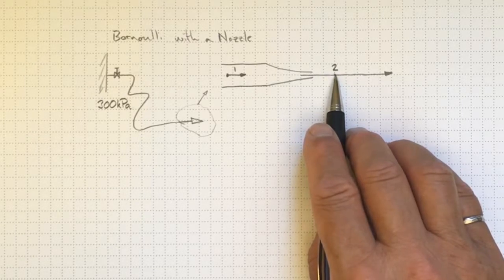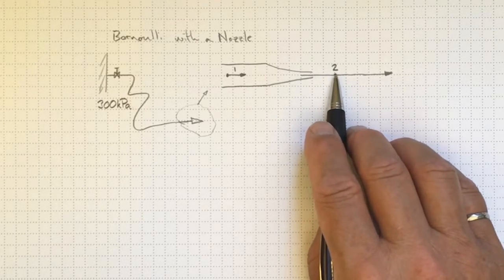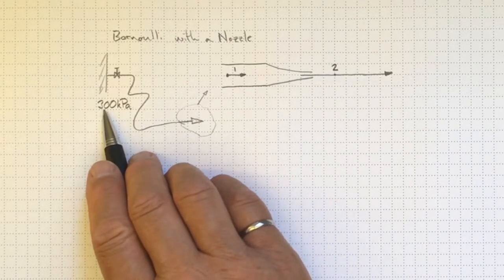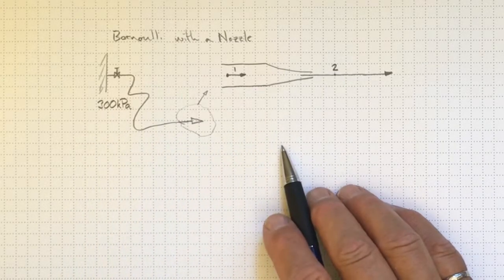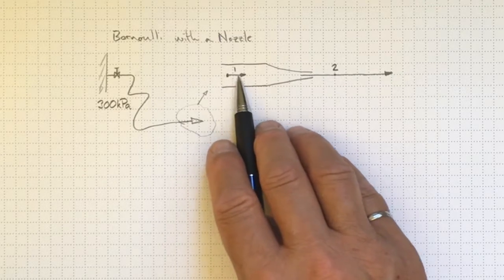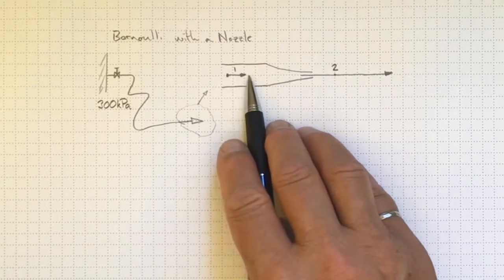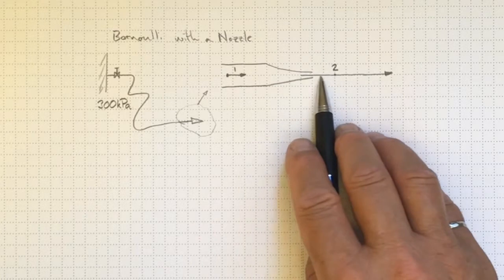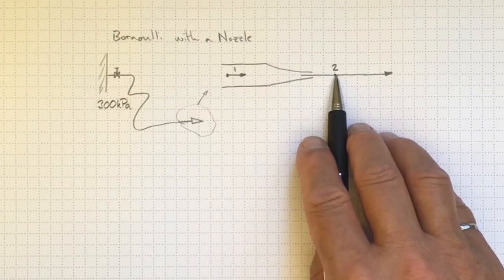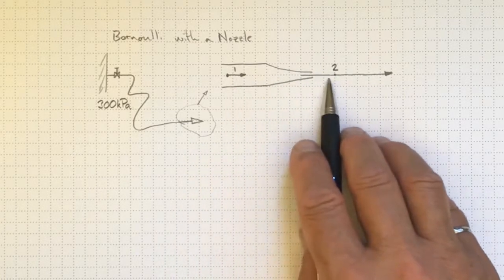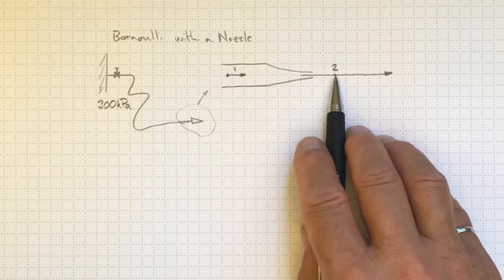We'd like to know what the velocity will be at location 2 based on the input pressure. So we'll start by writing Bernoulli's equation. We can write it here because it's going along a streamline. This particle is going to follow a streamline in this direction along and eventually get to point 2. So energy should be conserved along that path if we ignore friction.